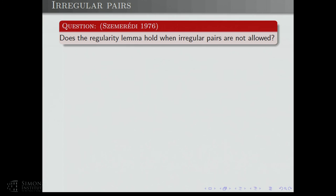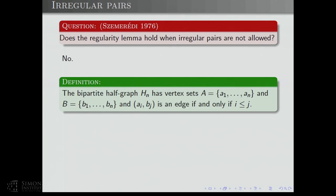Here's a nice question that Szemerédi asked. Does the regularity lemma hold when irregular pairs are not allowed? The regularity lemma tells us that on average the parts were epsilon-regular, and it allows for some pairs of parts to be irregular while most are regular. It turns out there are very natural applications in property testing where it would be very helpful if the regularity lemma had a stronger statement that all pairs were regular.